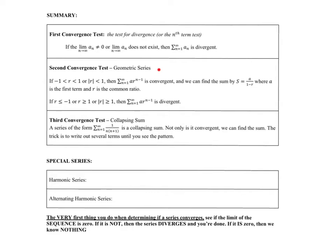The second one is the geometric series test. That one you will often be able to recognize with more practice. It's going to be in the form of AR to the n minus one. If you're working on a multiple choice question and it asks what is the value or sum of the series, that often indicates a geometric series, because it's one of the very few that we can actually find the sum of. Most series we analyze — you can only determine if it's convergent or divergent.